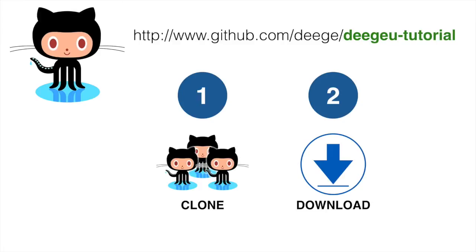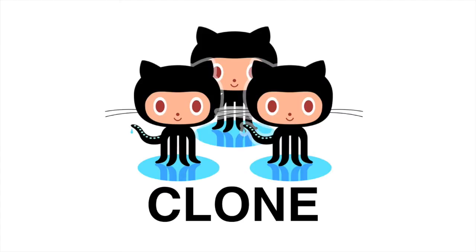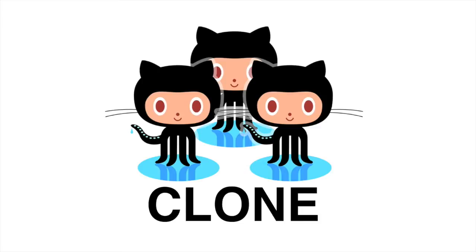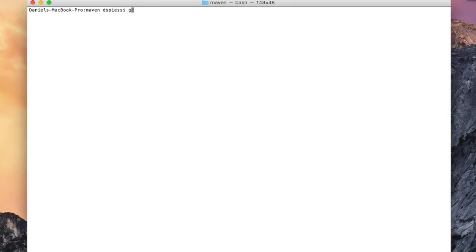You can get the source code in one of two ways: you can clone the code, or you can download the code. Cloning the code requires that you have Git installed on your machine. You can check this by running the following command: git --version.